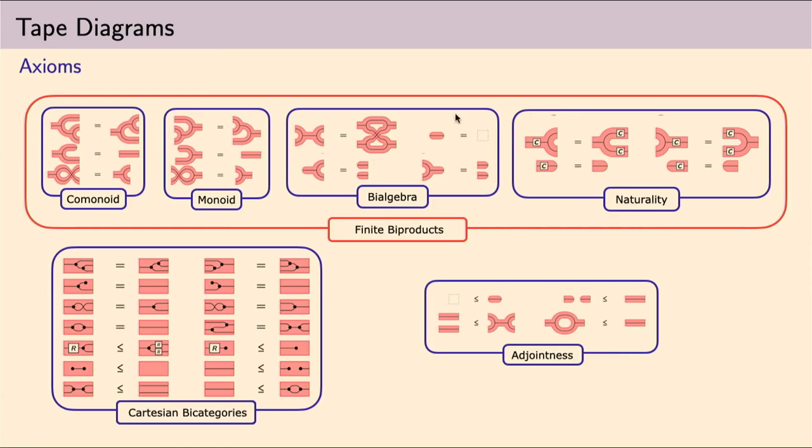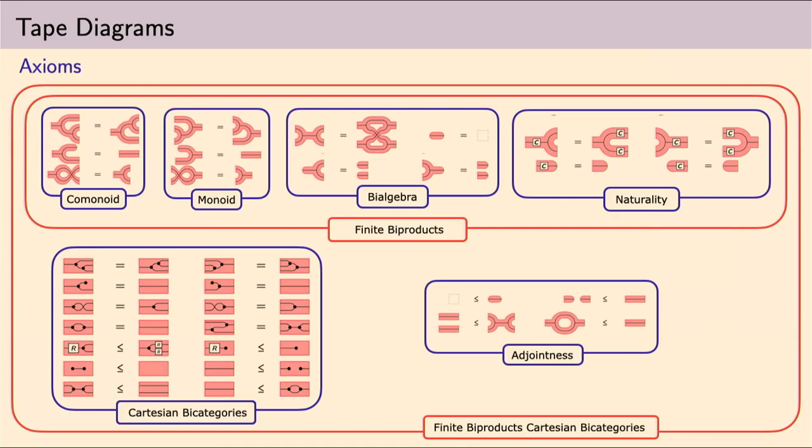If we also add the axioms of Cartesian bicategories, those we saw before, but taped, and some adjointness condition, we would get the axioms of finite biproducts of Cartesian bicategories, which are a special kind of rig categories.